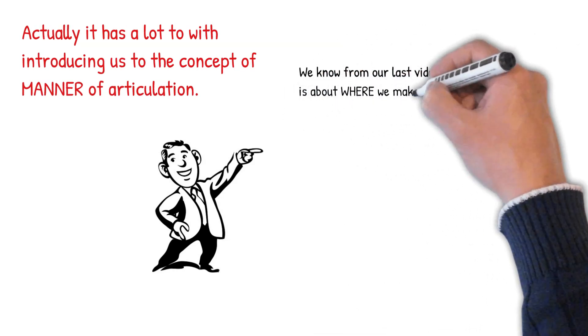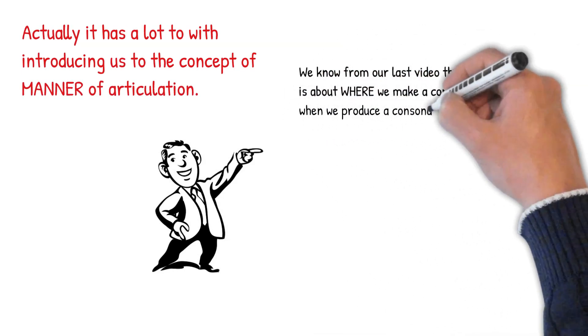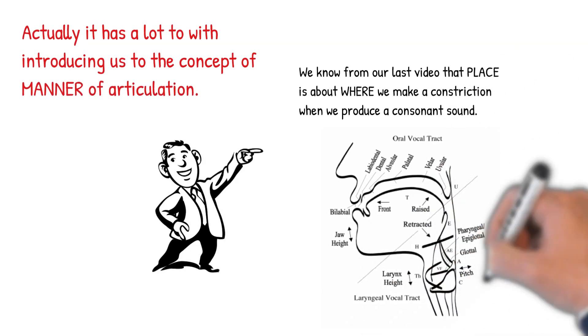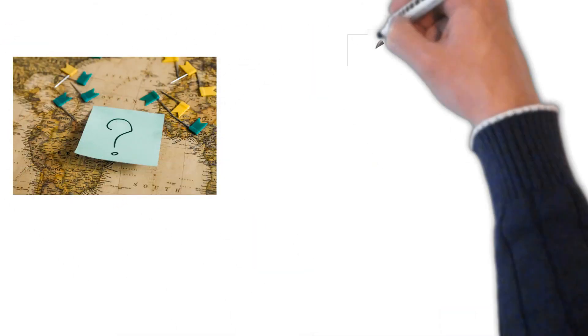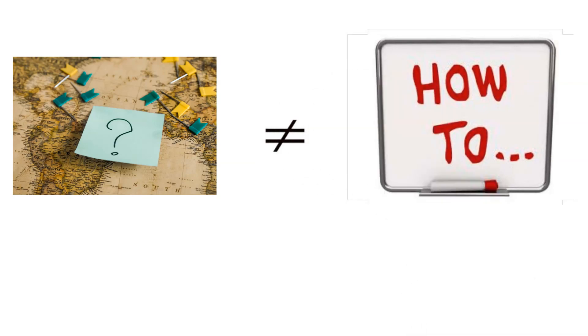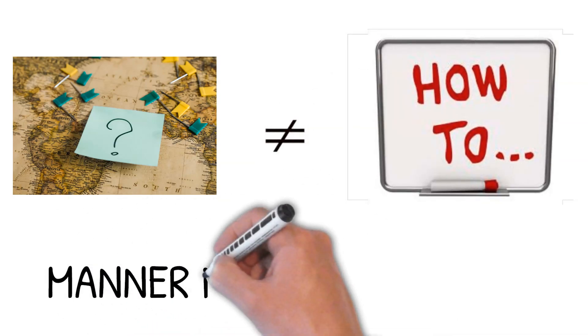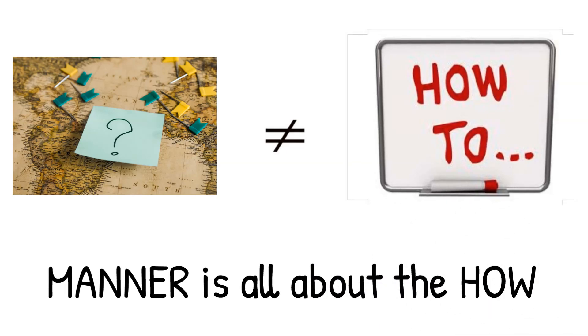In our last video, we learned about the concept of place of articulation, and by place we mean where in the vocal tract a consonant constriction is made. But knowing where a sound is made is clearly not the same thing as knowing how a sound is made, and manner of articulation is all about the how.